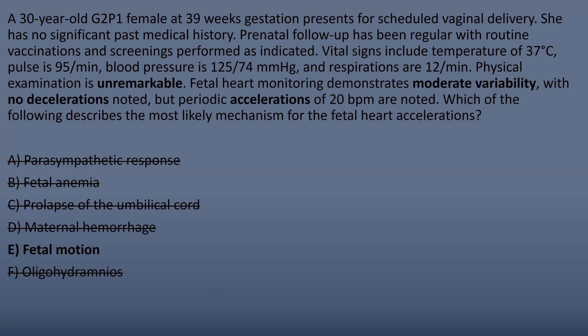The important findings are that the physical exam was normal, moderate variability, no decelerations, and accelerations — all totally normal. This is a Category 1 tracing, which we'll talk about shortly. Fetal motion was not meant to be an alarm bell; it's more that once you've ruled out all other choices, you know you're looking for something relatively benign and normal.